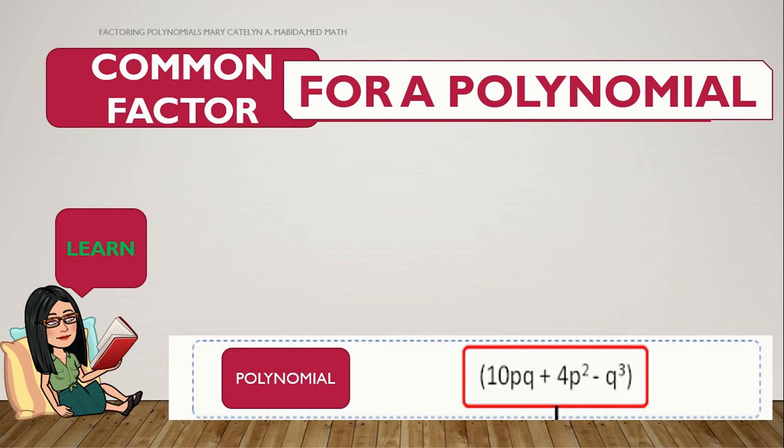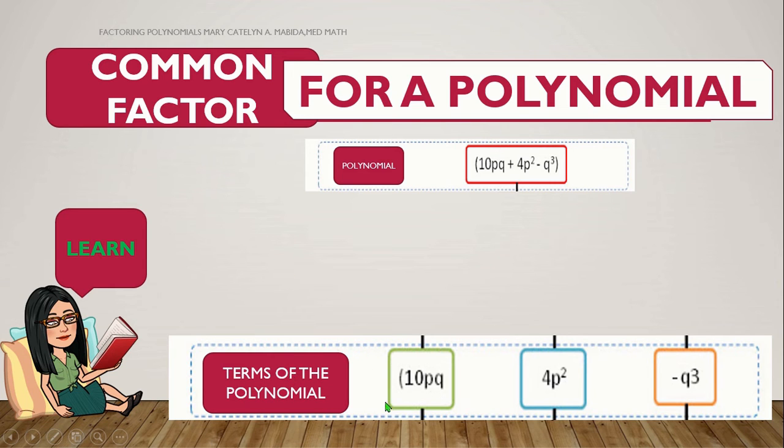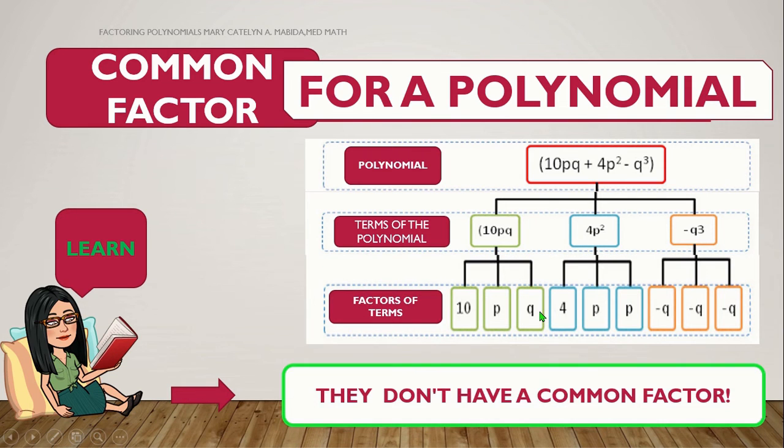Now, let's have this example. Take a look at the polynomial right here. So, let's identify the terms of the polynomial. And then, let us factor out the terms of each polynomial. Now, what have you noticed on the terms of each polynomial? That is right. They don't have a common monomial factor. And so, we cannot factor that out using common monomial factors. What could work? Well, that's another opportunity for another video.